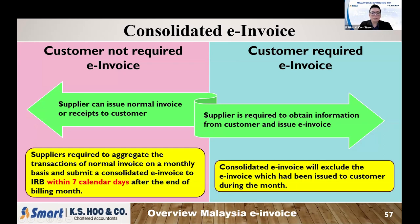This seven-day period includes weekdays and weekends. Let's say the first is a Monday and the second is Saturday and Sunday — those are also included. The guideline does not say the seventh day excludes weekends. So the seventh day includes weekends and public holidays. You need to manage yourself to track the due date for submitting this consolidated e-invoice.